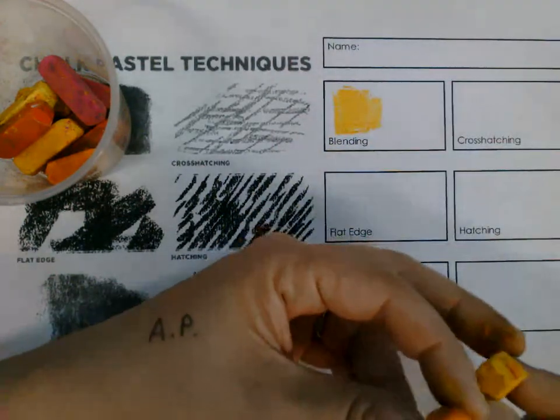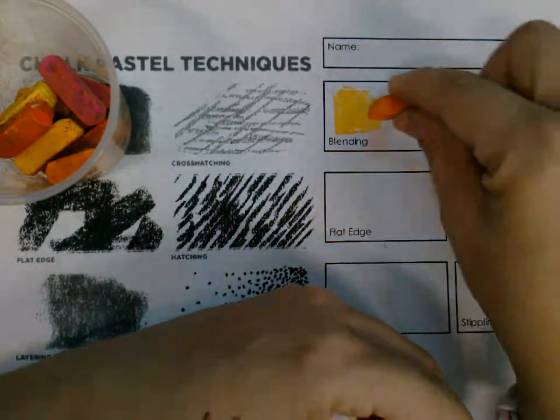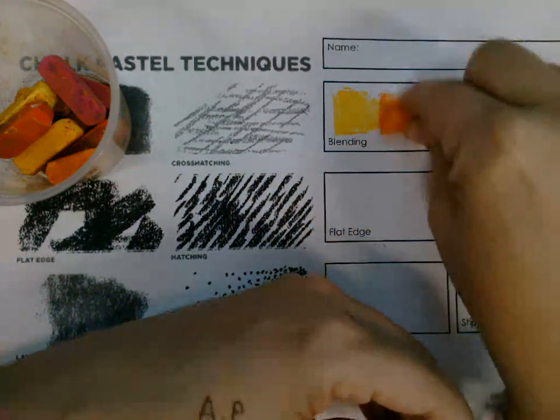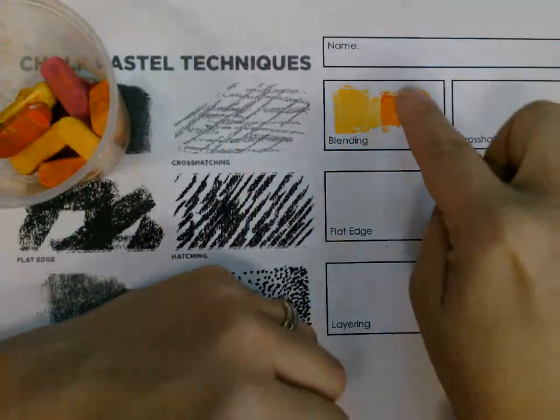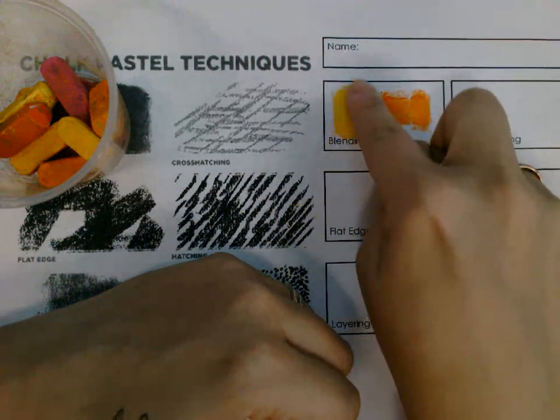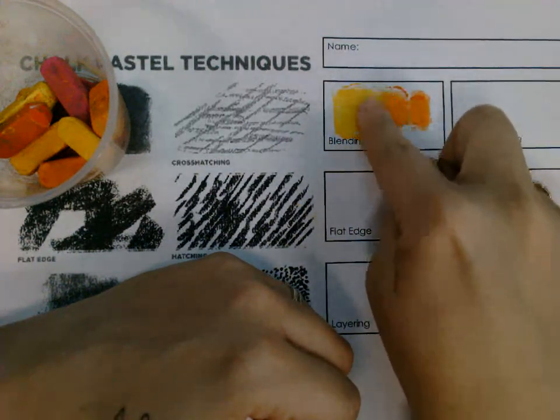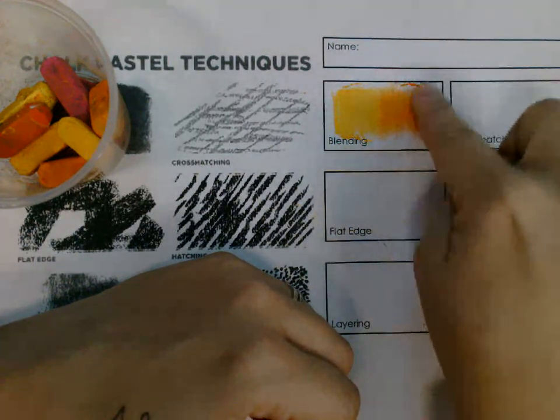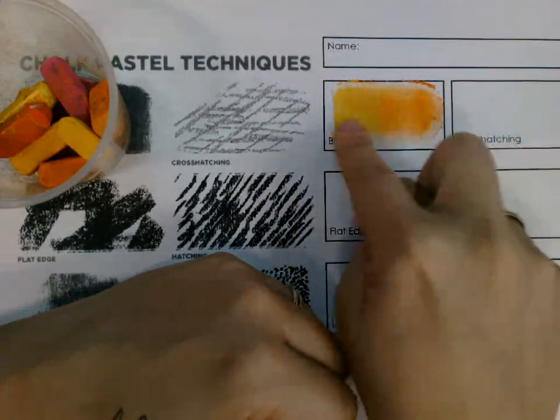So to blend, you just need to color a little bit of one color on one side, a little bit of another color on the other side. And then with your finger, I always start from lightest to darkest because it usually goes easier that way.